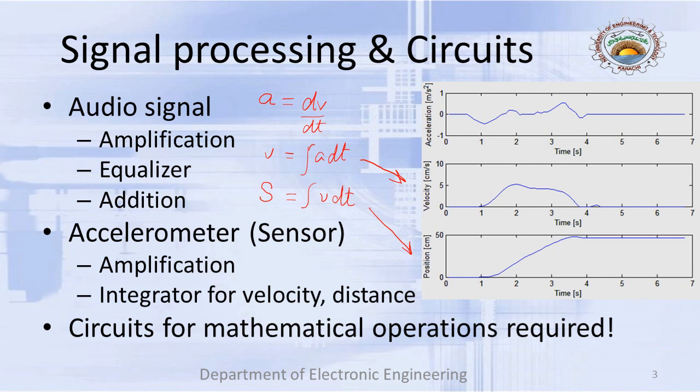For example, if you want to increase the bass in music or increase the higher frequencies, that can be augmented or suppressed using an equalizer — that is signal processing. Similarly, in karaoke singing or duet singing where two or more people are singing together or overlaying their voice over music, that is the addition of audio signals, and you need to perform that addition.